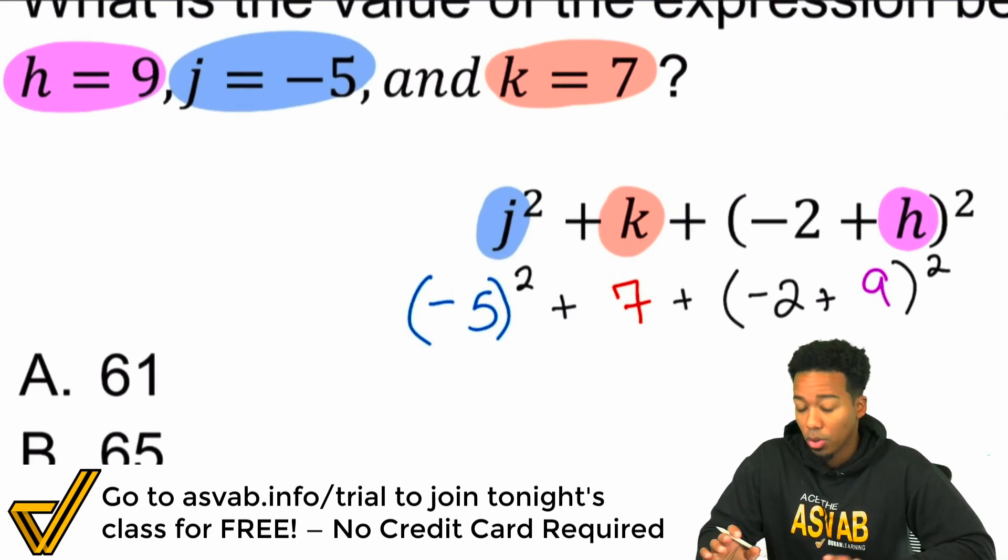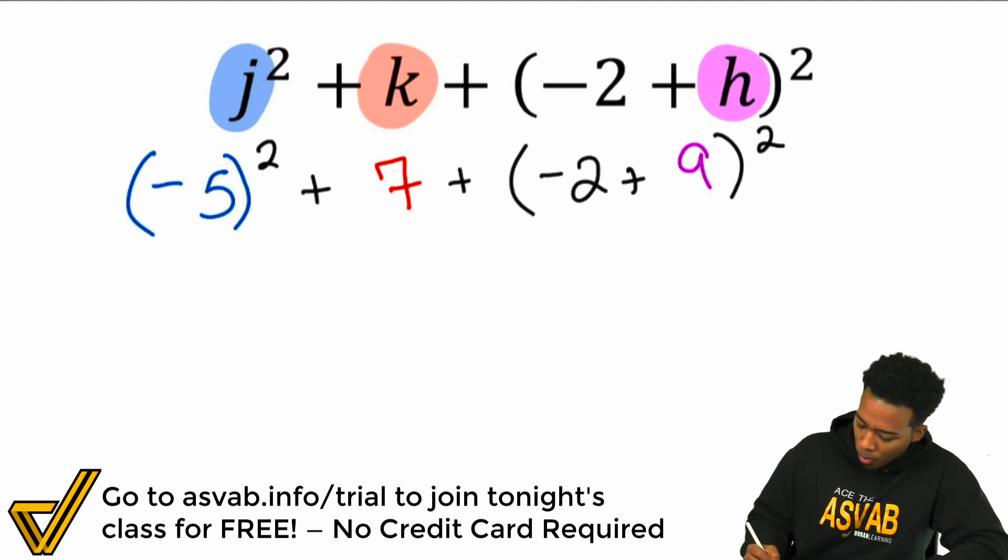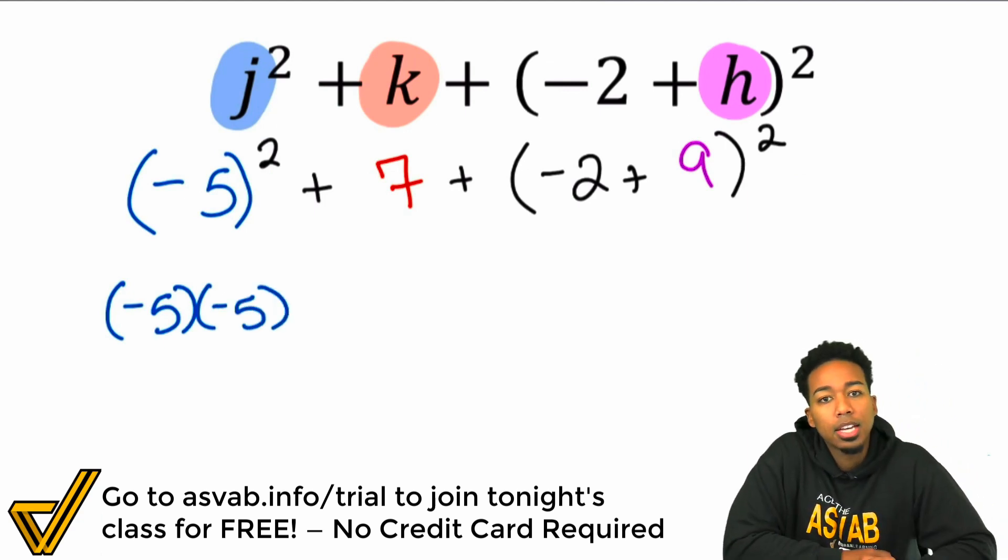So a couple of things we want to notice here. Notice the whole negative 5 is being squared. And also, you have to perform this and then you square it. A mistake that I know people make is that they will try to do 9 squared and then they add the negative 2 to it. That's not the case. The parentheses here means that you are grouping this and then you're squaring the results. And for those of you who just need that quick refresher, remember that squaring a number means that you're multiplying by itself twice. Just like that. That's what negative 5 squared means.